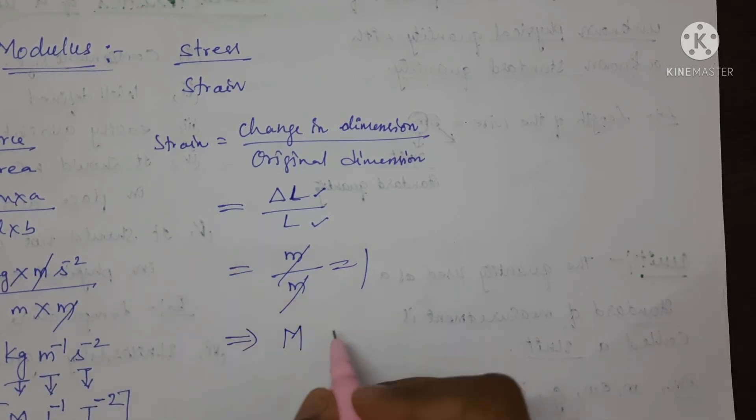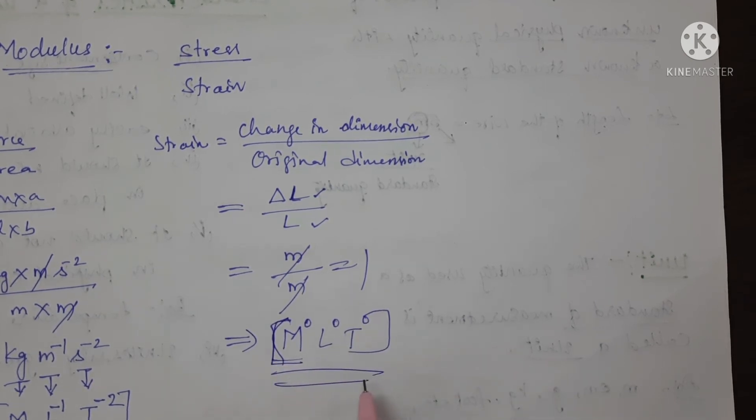To express the dimensions of the strain, we will write M power 0, L power 0 and T power 0. This is the dimension of formula for strain.